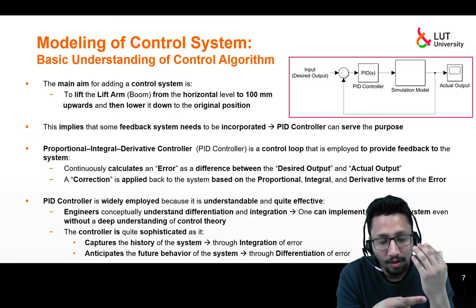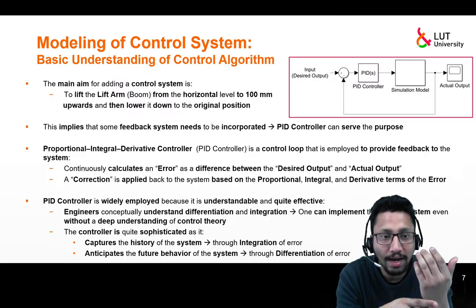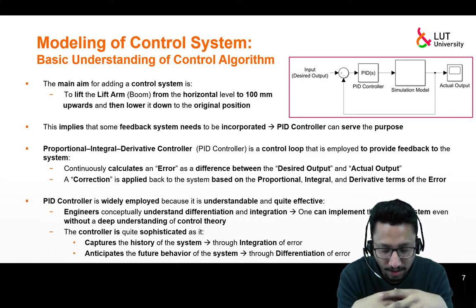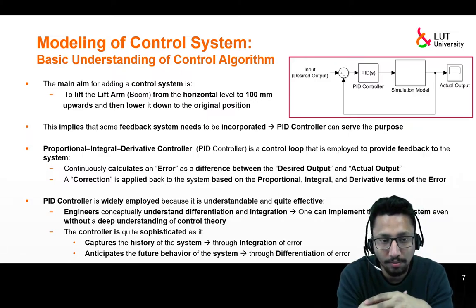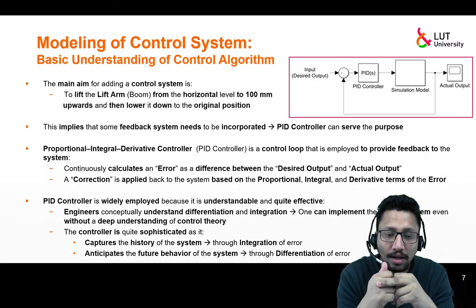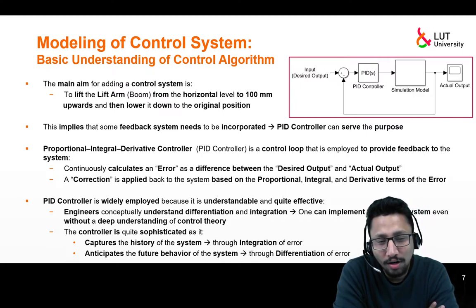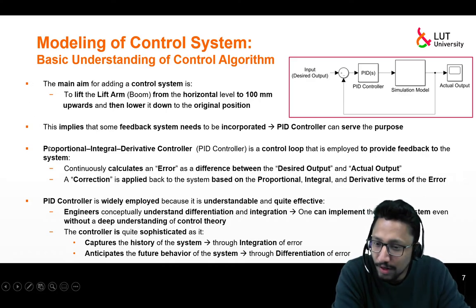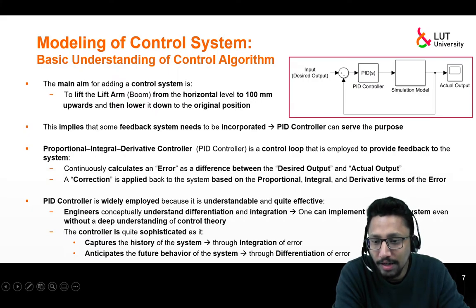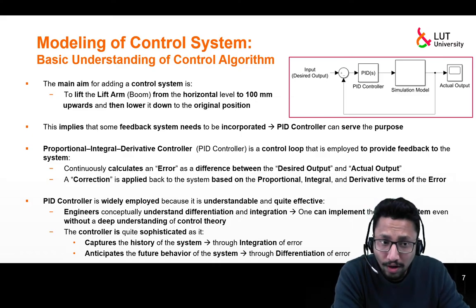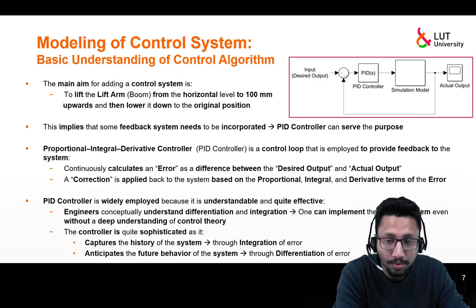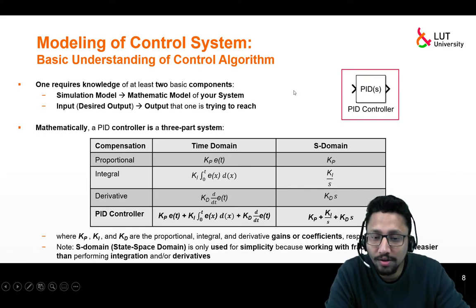This controller takes an error and based on it provides proportional, integral, or derivative terms. It captures the history of the system through the integration of the error — what happened with the system in previous time. The differentiation of the error helps us to anticipate the future behavior of the system. In simple terms: the proportional part takes care of the present, the integral part takes care of the past, and the derivative term takes care of the future.